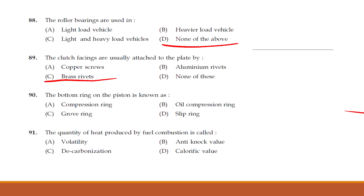The bottom ring on the piston is the oil compression ring. The quantity of heat produced by fuel combustion is called calorific value — option D.